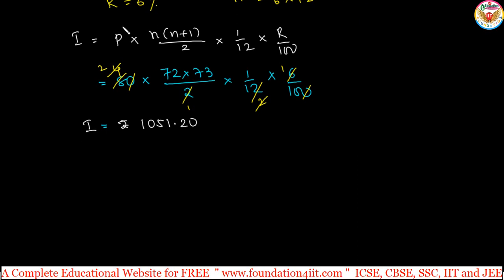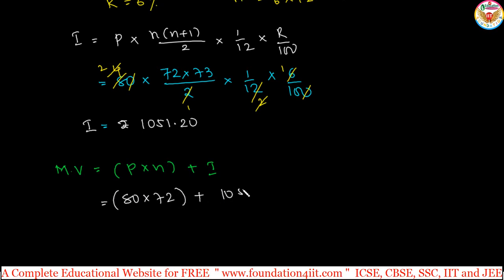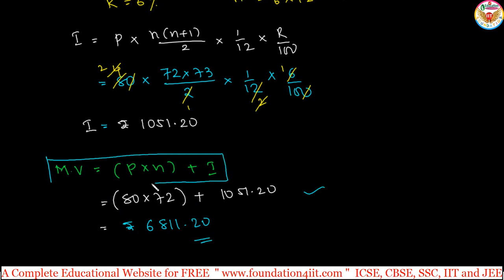Using this interest, we find the maturity value: MV = P × N + Interest. P is 80, N is 72 months, so 80 × 72 equals 5760, plus interest of 1051.20. Adding these gives the maturity value of rupees 6811.20. These are problems on calculating maturity value and interest directly. Next, we will see problems where the monthly installment or rate of interest is not given, and find those values instead.